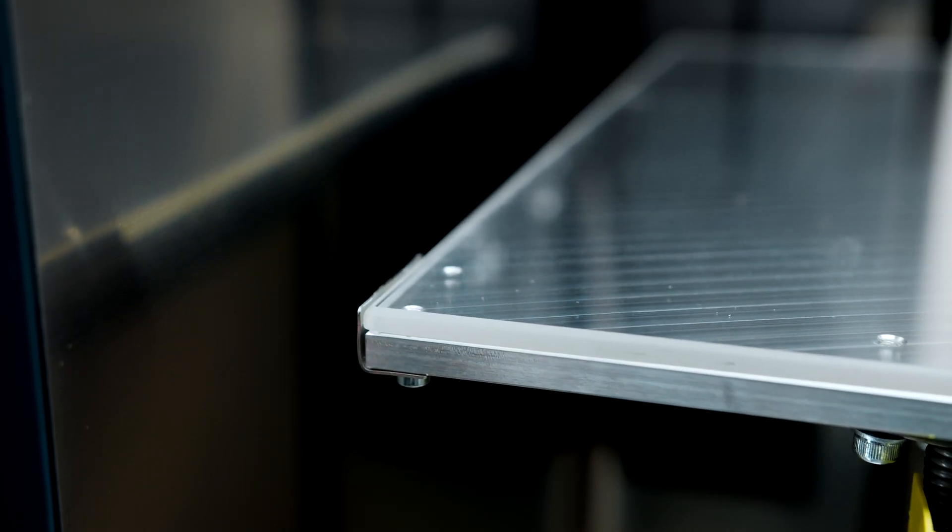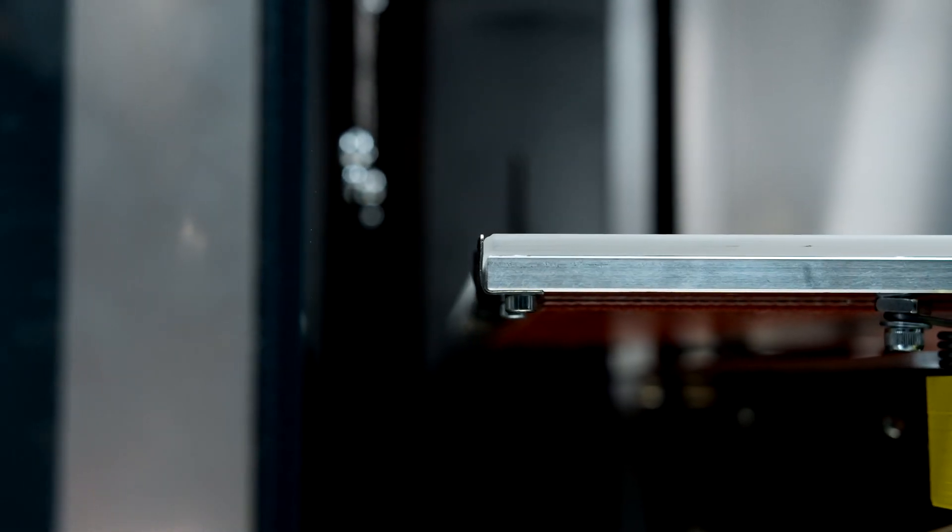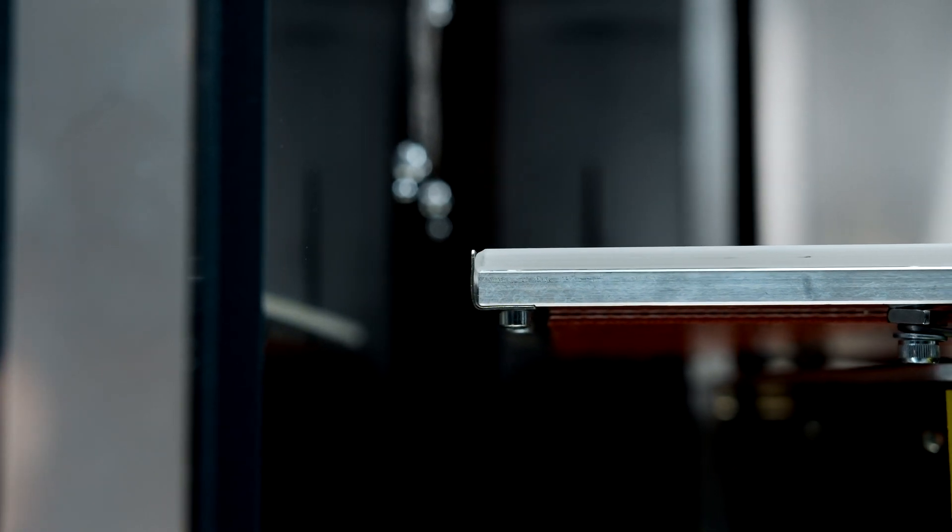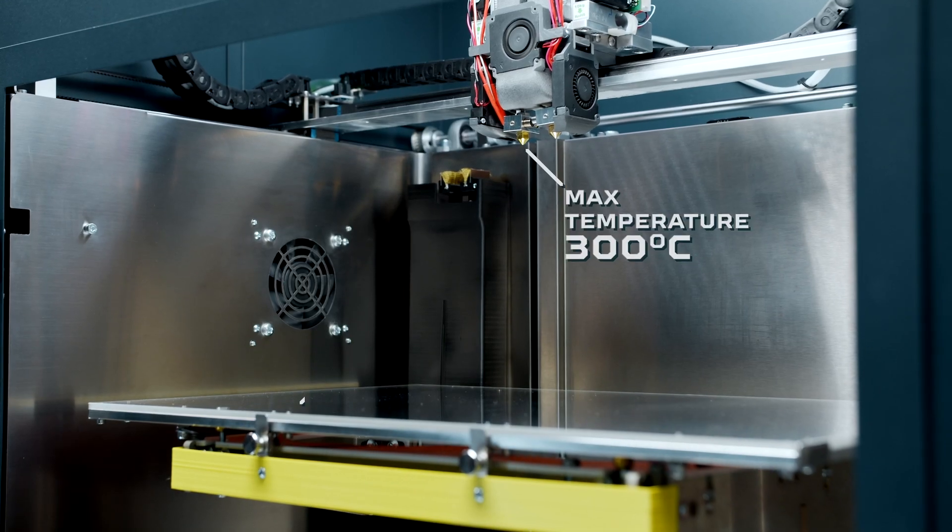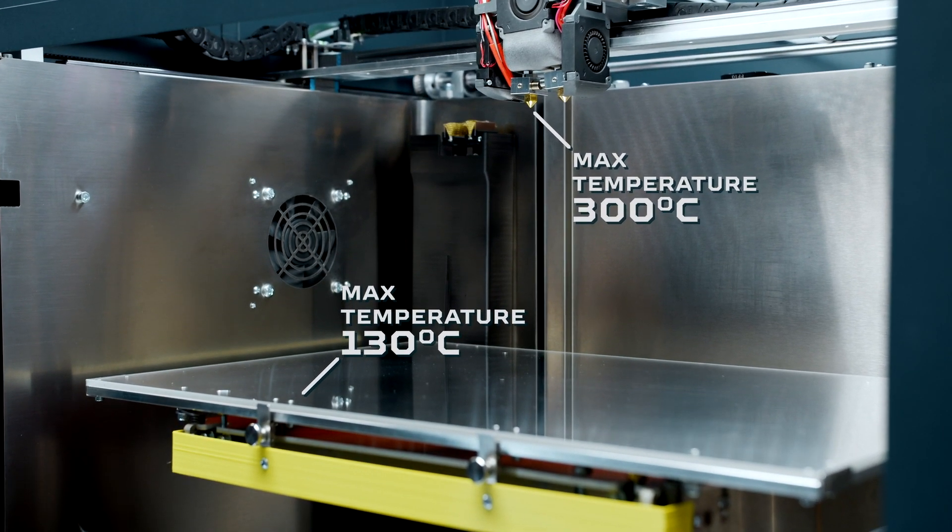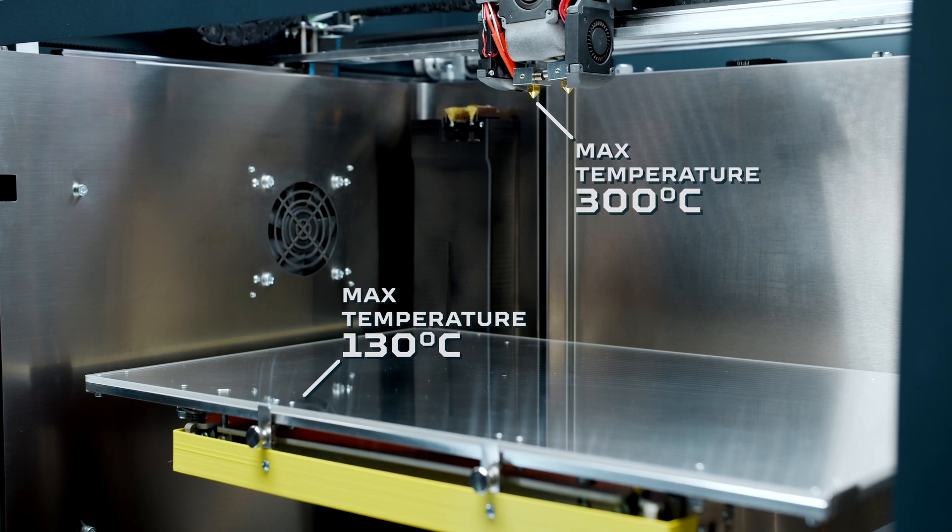The build plate is manufactured from 6-millimeter aluminum sheet and easy replaceable 4-millimeter borosilicate glass. 800-watt heater mounted on the table distributes the heat evenly and allows temperatures to 130 degrees Celsius.